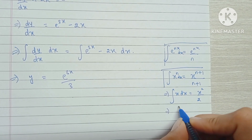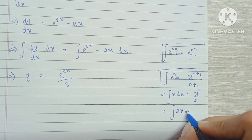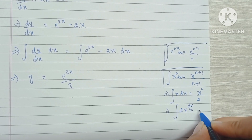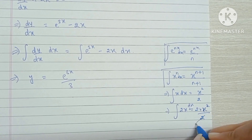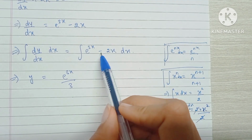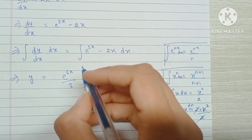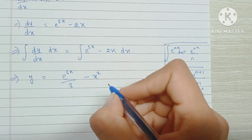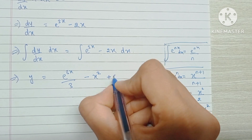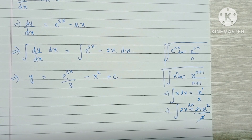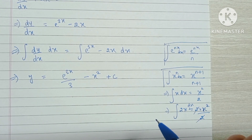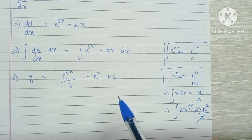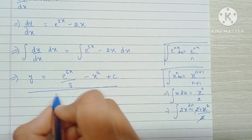So the integral of 2x dx will be 2 into x squared by 2, and the 2 will get cancelled out, leaving only x squared. So the integral of minus 2x becomes minus x squared. Now we'll also add an arbitrary constant as we always do after integrating. Since the whole equation no longer has any dy/dx and nothing is left to integrate, this becomes our final answer.